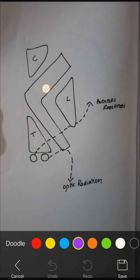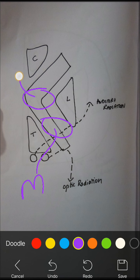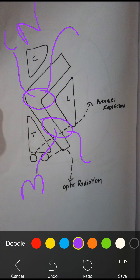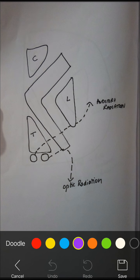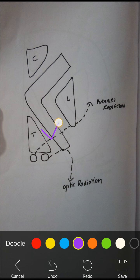The motor tract of the body is the corticospinal tract; the motor tract of the head and neck is the corticonuclear tract. The sensory tract of the body includes the spinothalamic system and the dorsal column medial lemniscal system. The sensory tract of the head and neck is the trigeminal tract. So: corticospinal tract and spinothalamic/dorsal column system pass through the posterior limb; corticonuclear fibers and trigeminal tract pass through the genu.